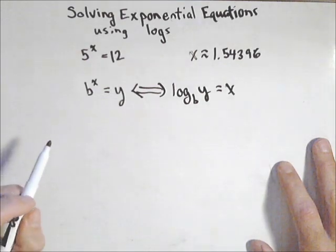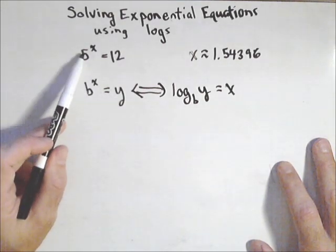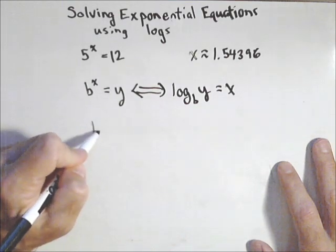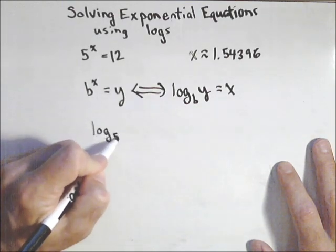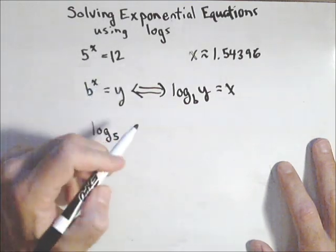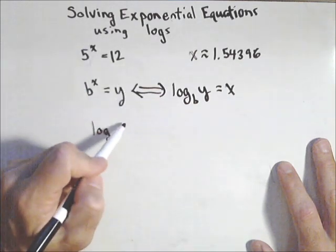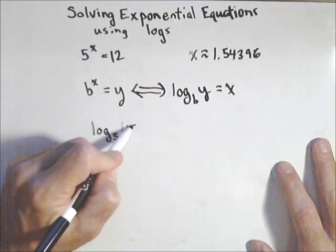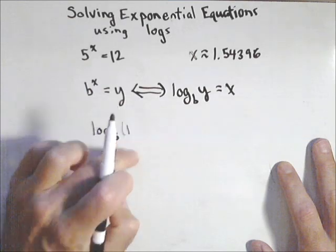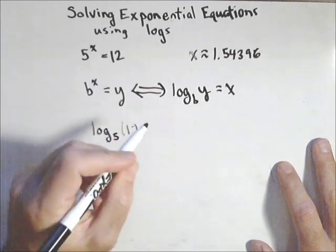So this would be one way of approaching this problem. We can rewrite it. We've got a base of 5, so it'll be a log base 5. We're taking that of 12, because we want to get x. So log base 5 of 12 gives us x.